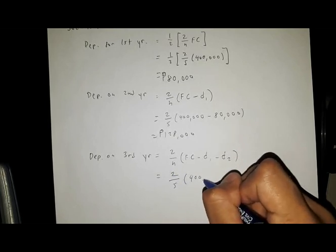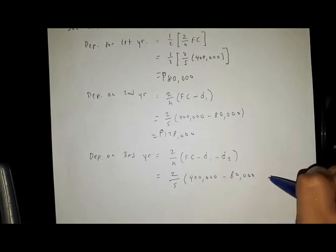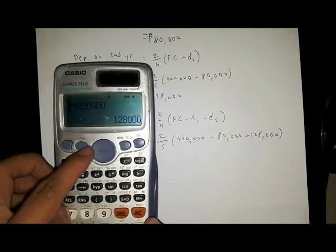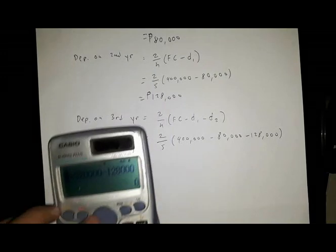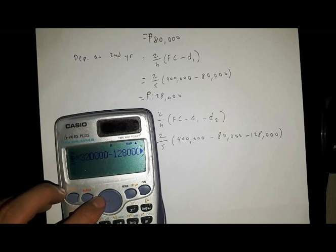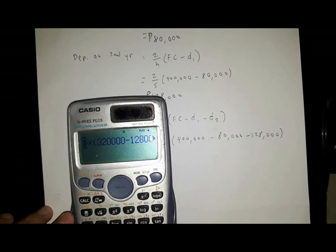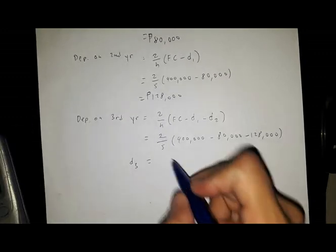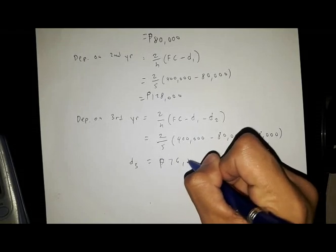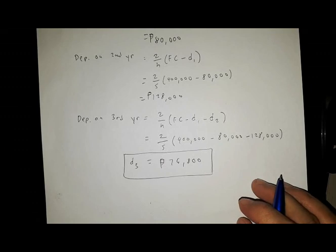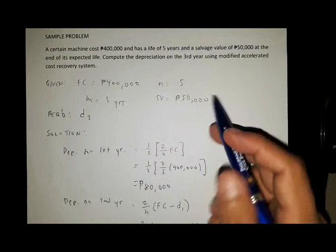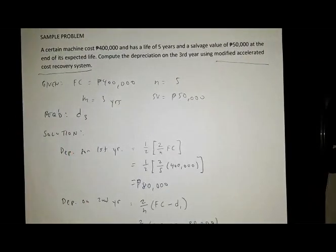Substituting all values, and making sure not to forget the parentheses, the depreciation on the third year, D3, is equal to 76,800 pesos. That is the depreciation on the third year computed using the Modified Accelerated Cost Recovery System method of depreciation.